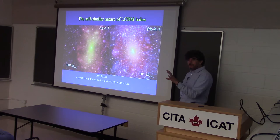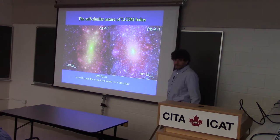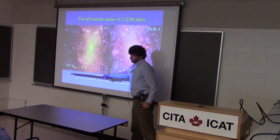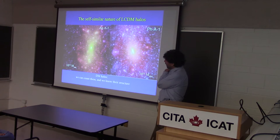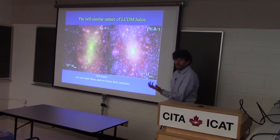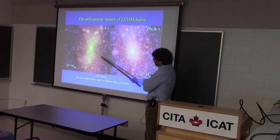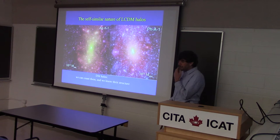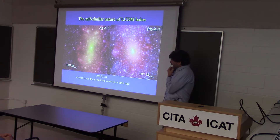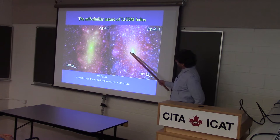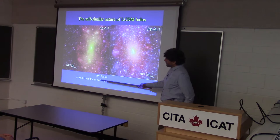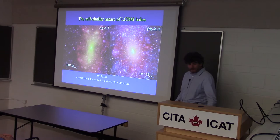If you scale dark matter halos to that radius — halos that differ by a factor of a thousand in mass — scaled to the same virial radius size, they look very similar. There is a self-similarity in the structure of these nonlinear systems. We know their structure, how dark matter is distributed from the center outwards, how many of each there are as a function of mass, their clustering — basically everything.